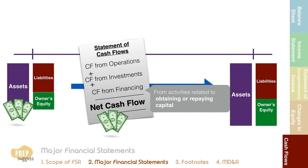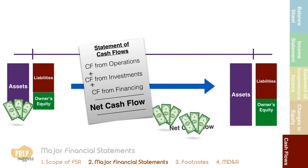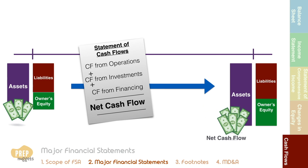The sum of the three cash flows is the net cash flow for the period. When added to the cash balance from the previous period, it gives us the cash balance shown in the balance sheet at the end of the current period.